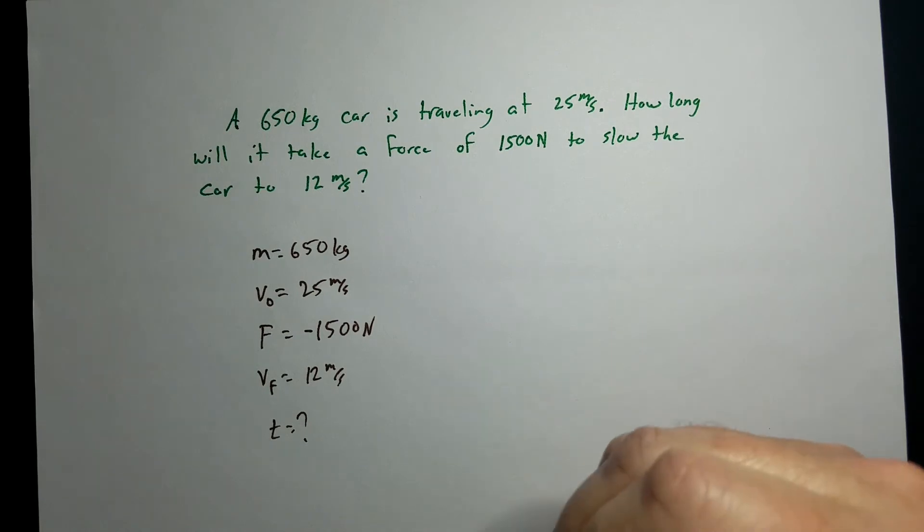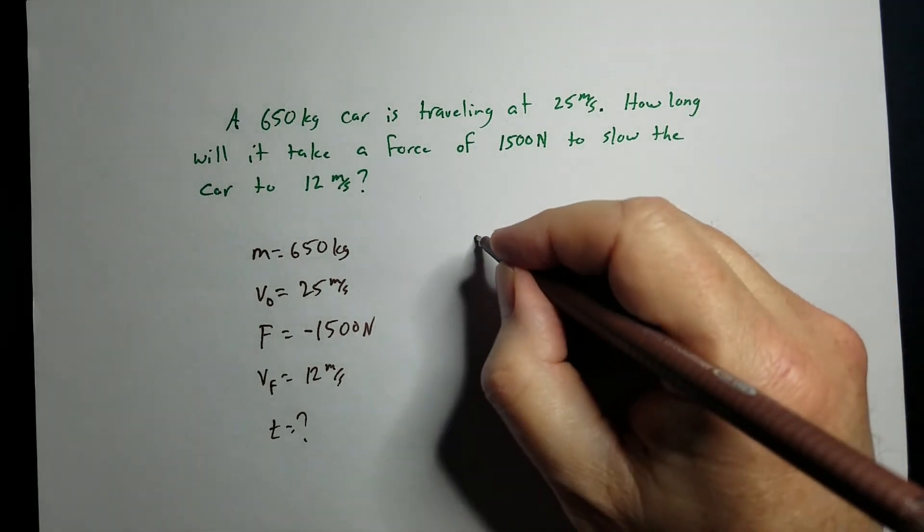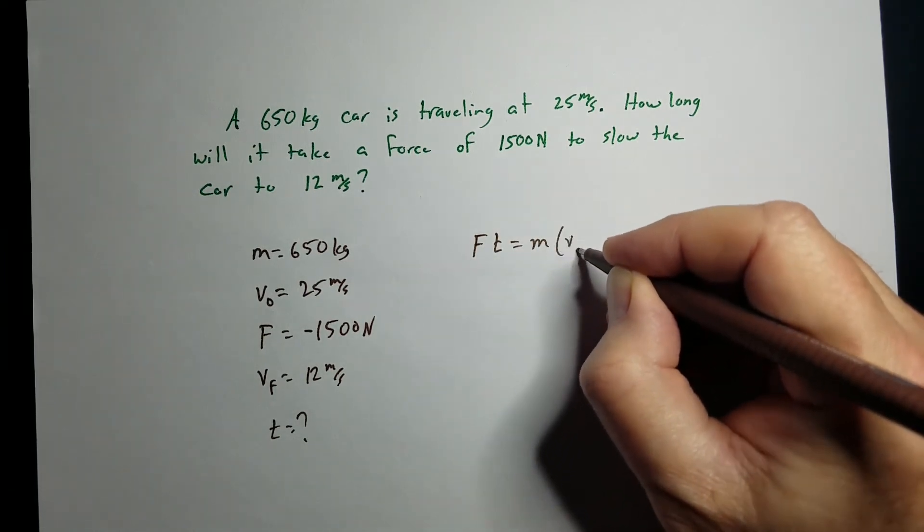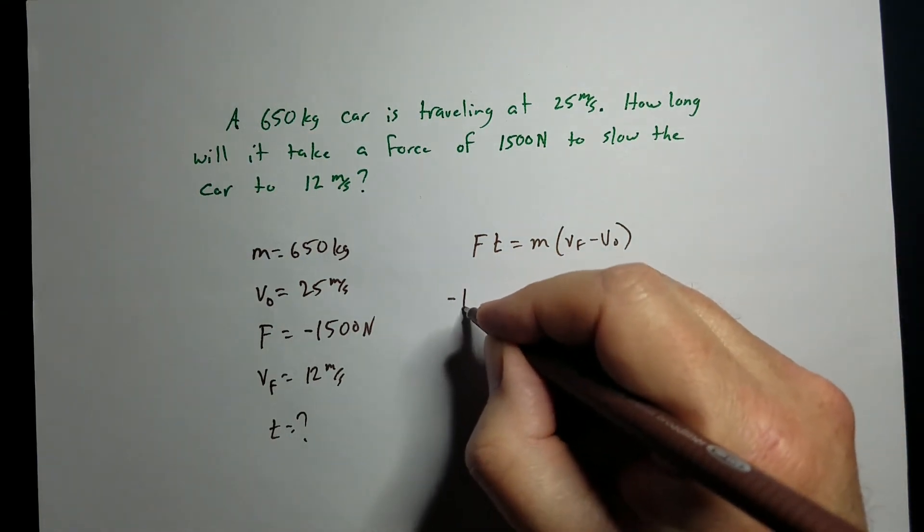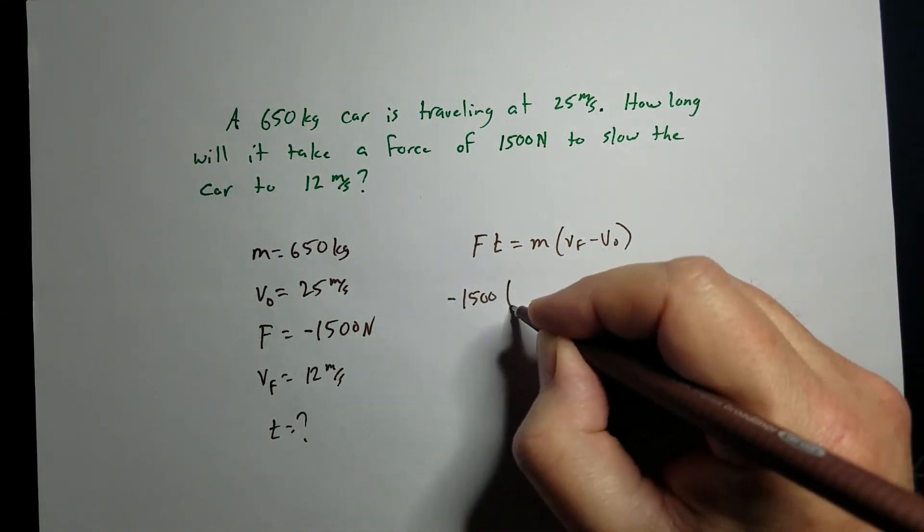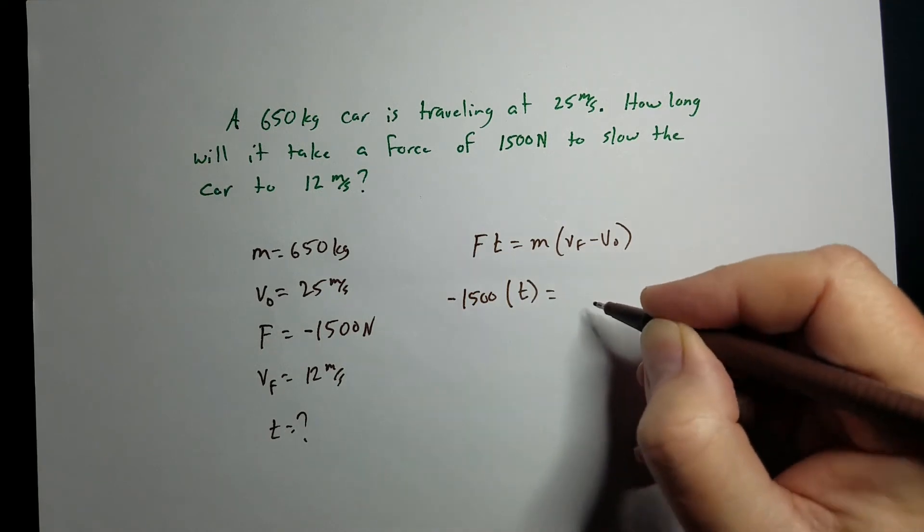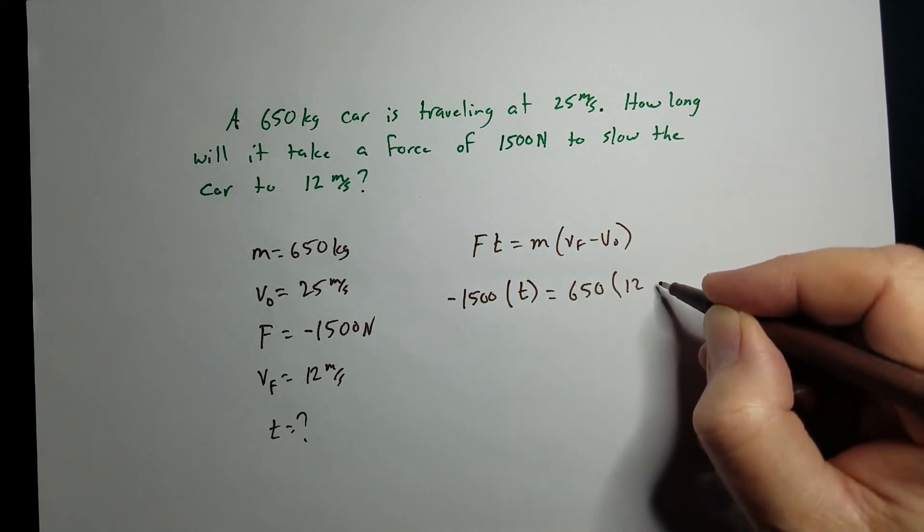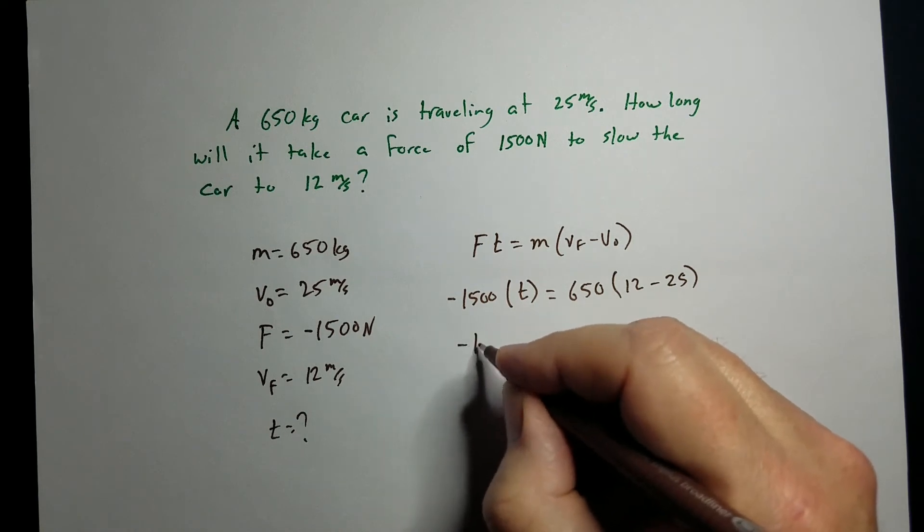So again, I'm not looking for a specific momentum or impulse. So, I'm going to start off with this combined equation. Alright, force, negative 1500. Time, we don't know. That's what we've got to find. Mass, 650. Final velocity, 12. Original velocity is 25.